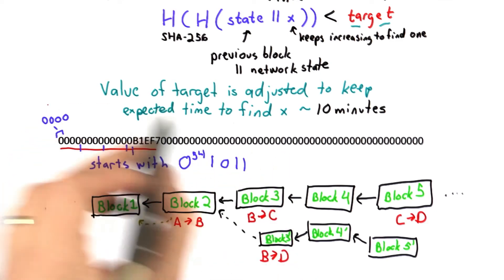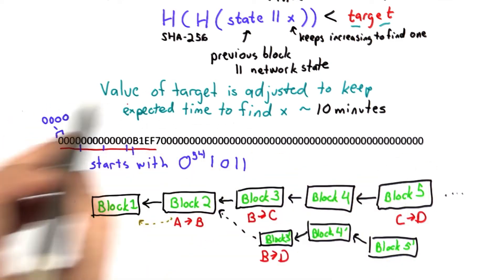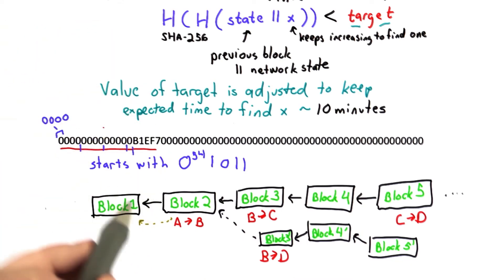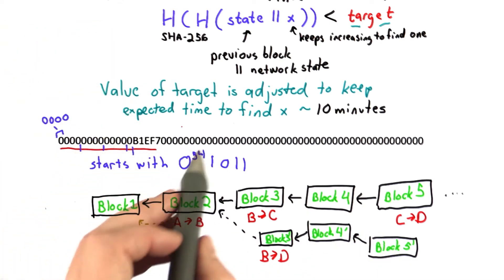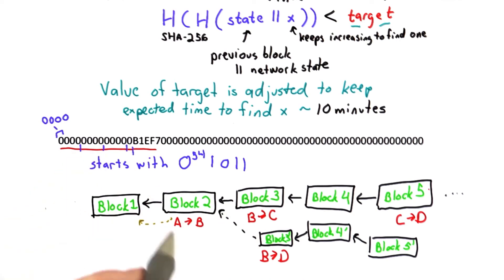That requires finding these hash values. If the power of the network exceeds the power of the adversary, then it's likely the network will have a longer chain than the adversary can produce. And keep in mind the motivation for producing this attack is just to be able to double spend one coin.